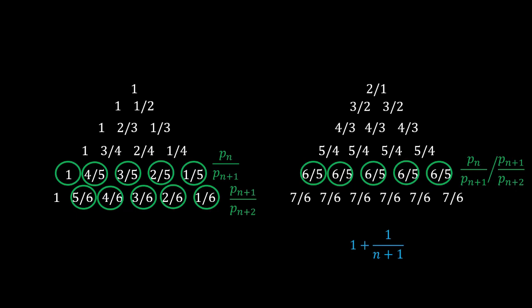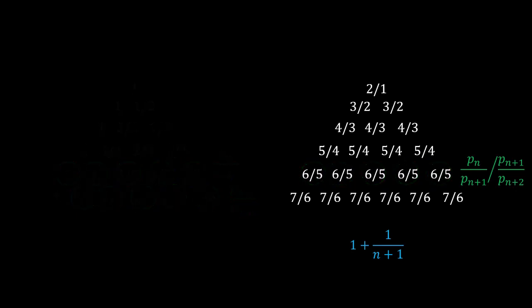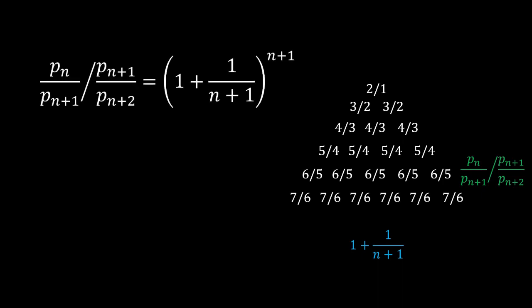So indeed, now we have the ratio of ratio appearing. So this is it. Actually, we just need to equate the facts together. We have the ratio of ratios equals to the product of all the terms in the nth row. But the nth row is nothing except just n plus 1 identical copies of the value 1 plus 1 over n plus 1. So the two expressions show that they are identical.